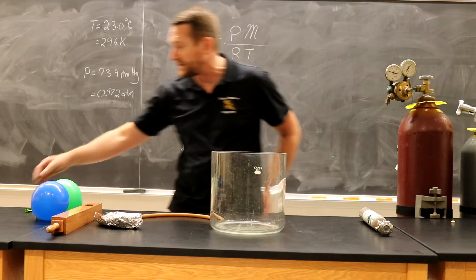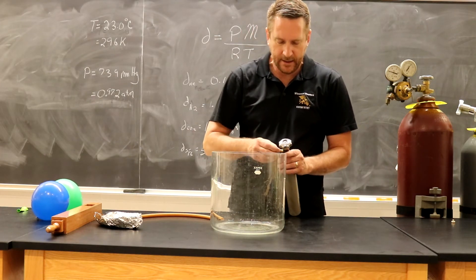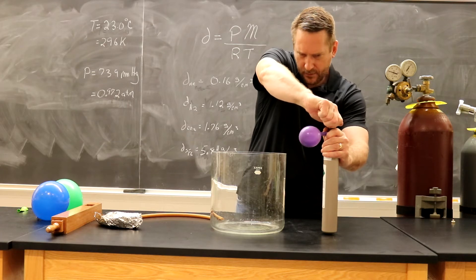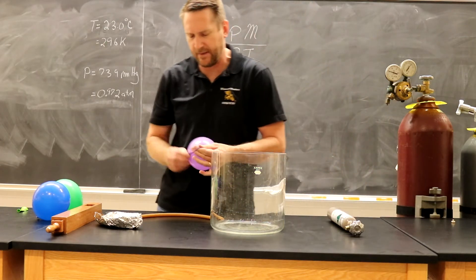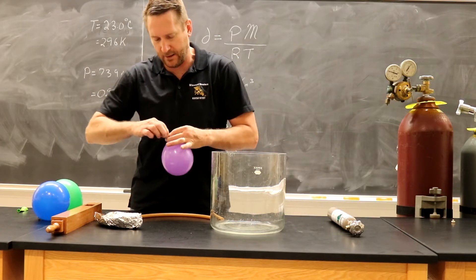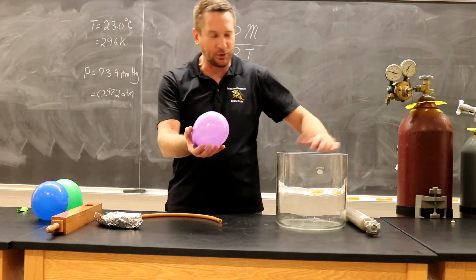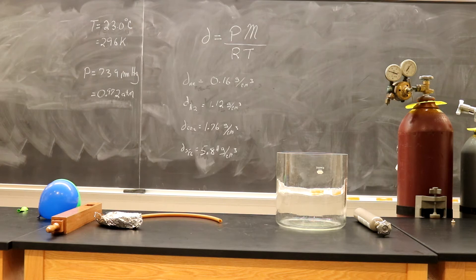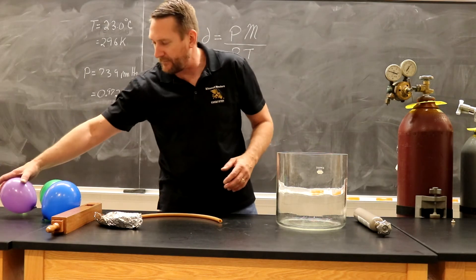Now I'm going to get a balloon full of sulfur hexafluoride. I'll do purple for that. We'll get some sulfur hexafluoride in there — it's about the same size. I'll tie that off and set it on the counter. I'll tell you this balloon is heavy. It's weird to feel it, that a balloon would have so much mass, but you can see it drops like a brick. This thing has quite a lot of mass because of the density of that sulfur hexafluoride.